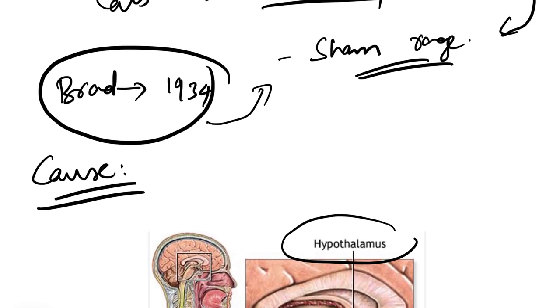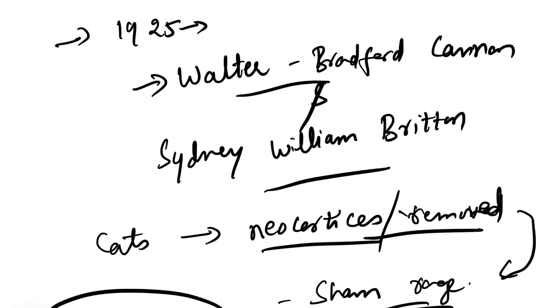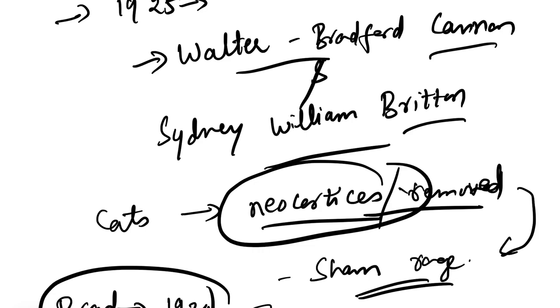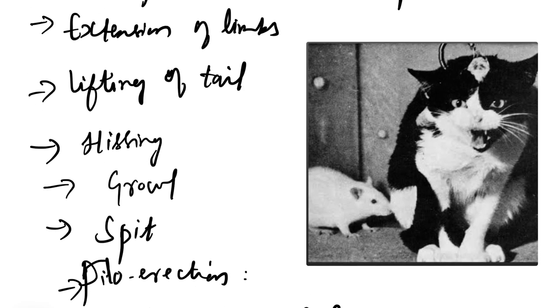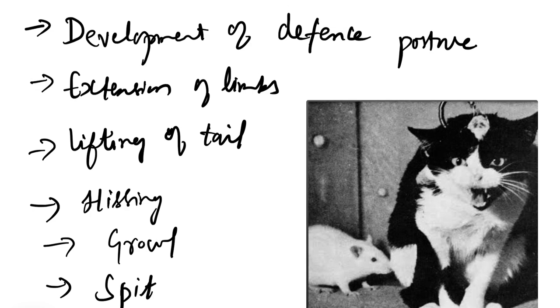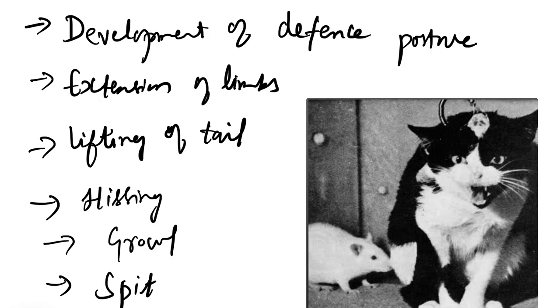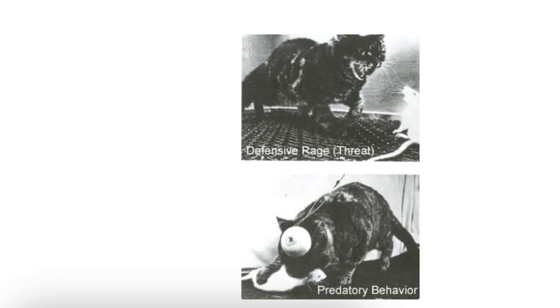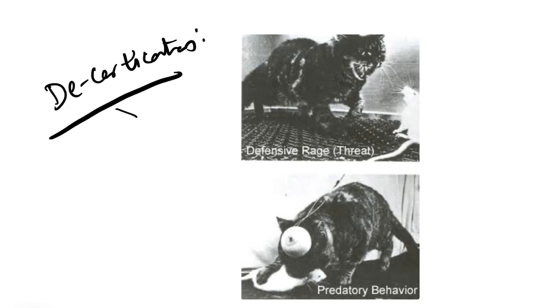Earlier it was thought that when Cannon, Britton, and Bard removed the neocortex of experimental animals, the animal showed symptoms of sham rage — due to the smallest stimulus, there is no real reason for rage, yet the animal develops defense posture, extension of limbs, making sounds, and violent behavior, even trying to catch prey — such defensive and predatory behavior. This behavior after removal of the neocortex — the process called decortication — leads to sham rage.